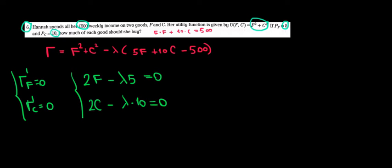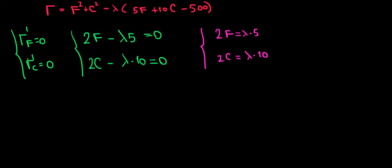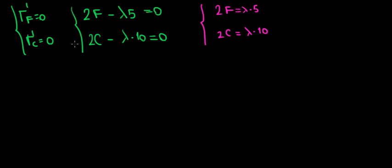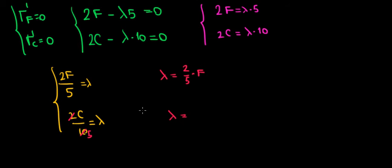We have Lambda on both sides, so let's isolate Lambda. We have 2F divided by 5 equals Lambda from the first equation, and 2C divided by 10 equals Lambda from the second. We can simplify: 2 and 10 cancel out, so Lambda equals 2 over 5 times F, and Lambda equals C over 5.